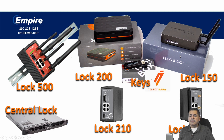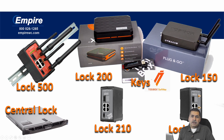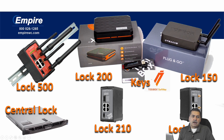Here's the TosiBox product line. On the right hand side we have the Lock 150 — that's the starting unit — and then you can upgrade to a Lock 200. New to the 200 line is the Lock 210 and Lock 250. On the other end we have the Lock 500, and finally at the bottom we have the Central Lock.